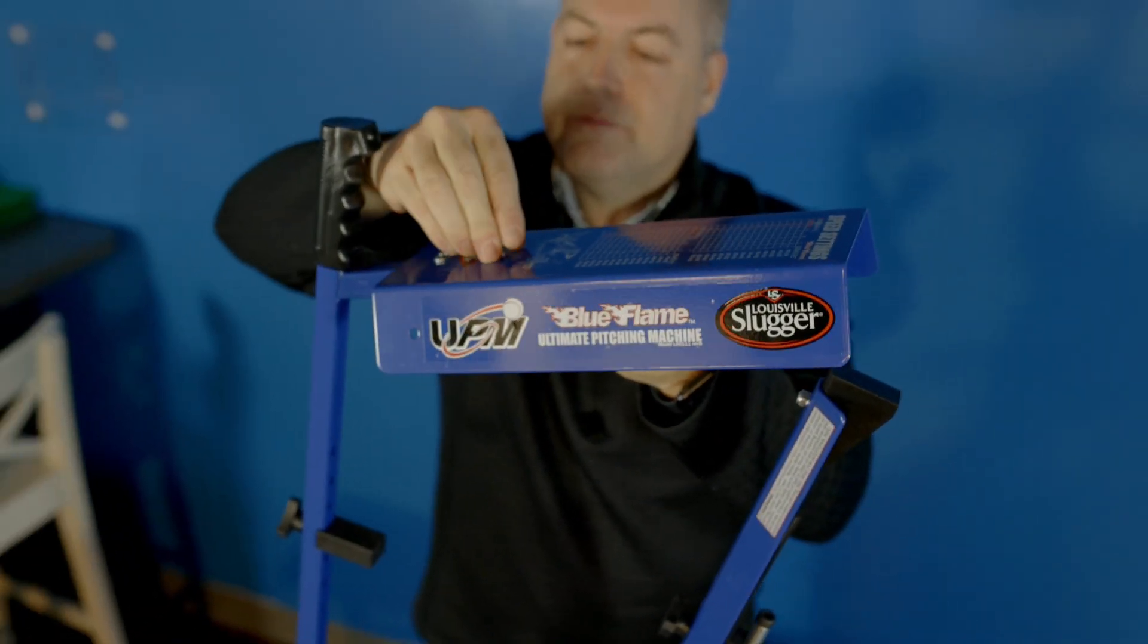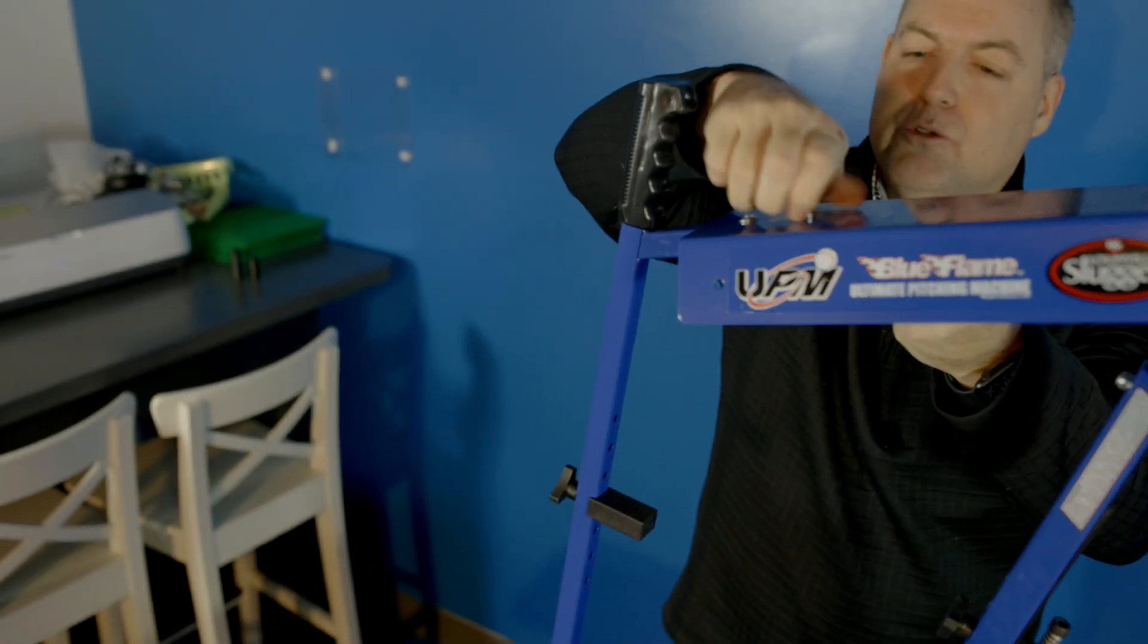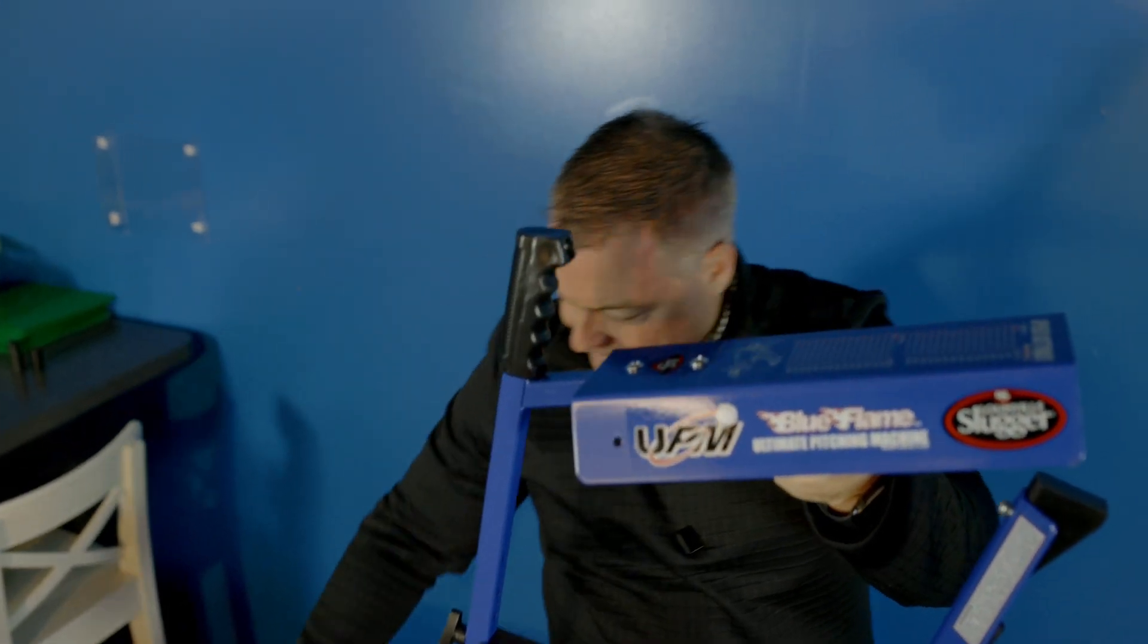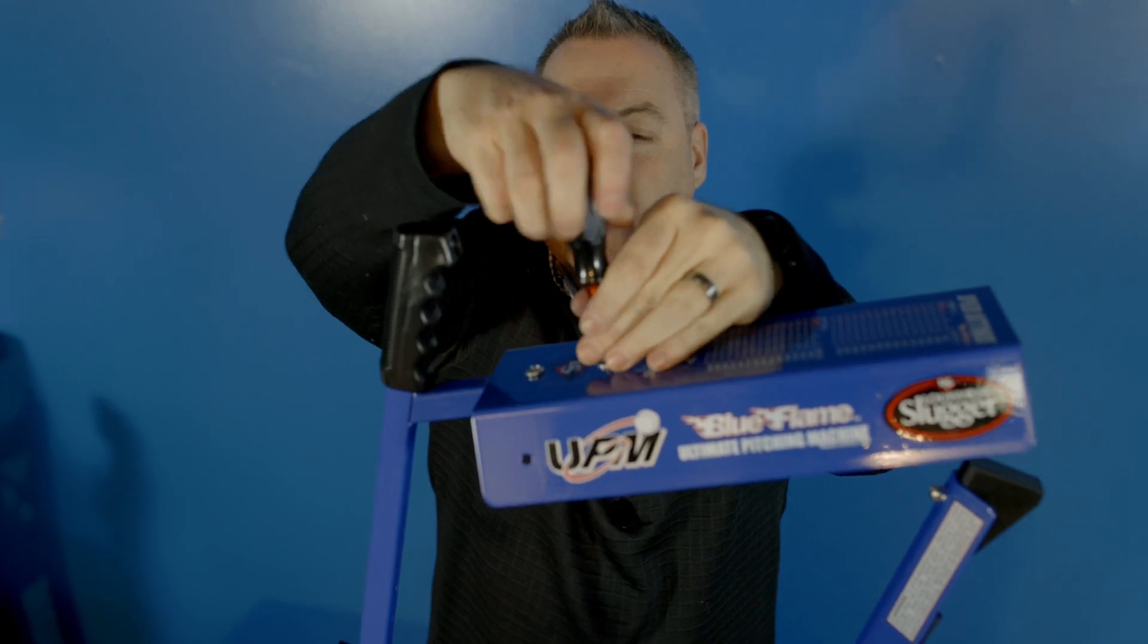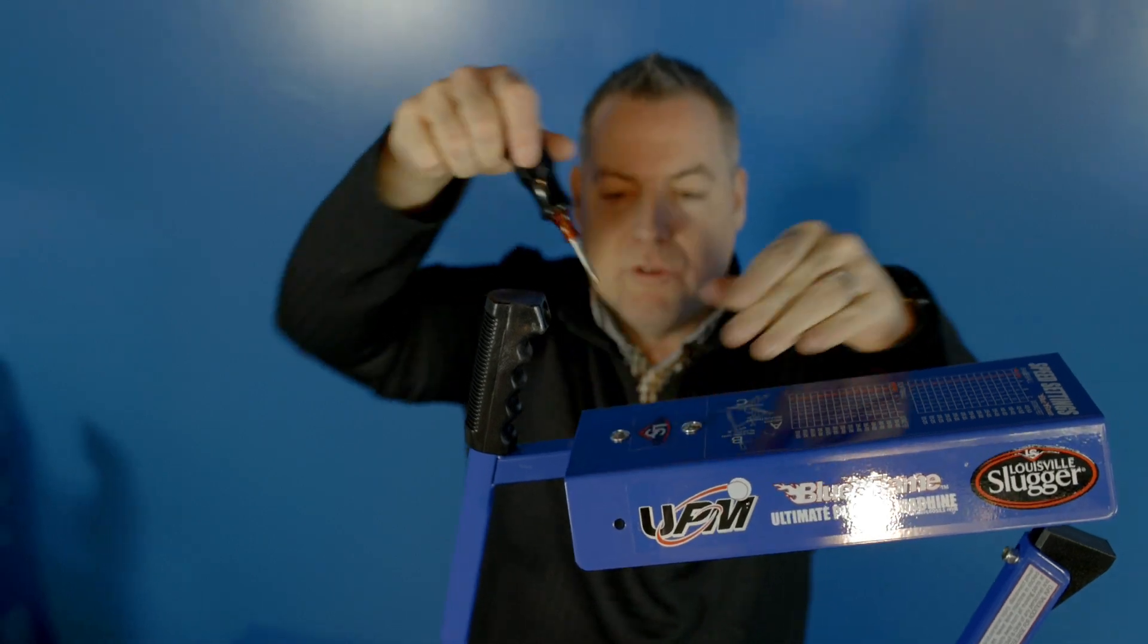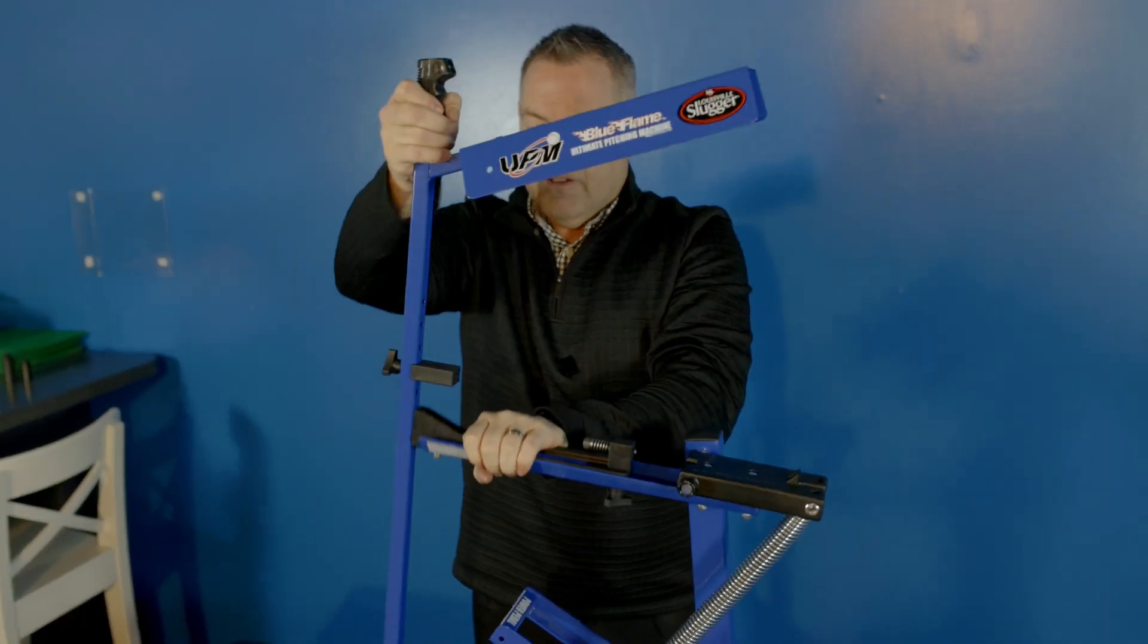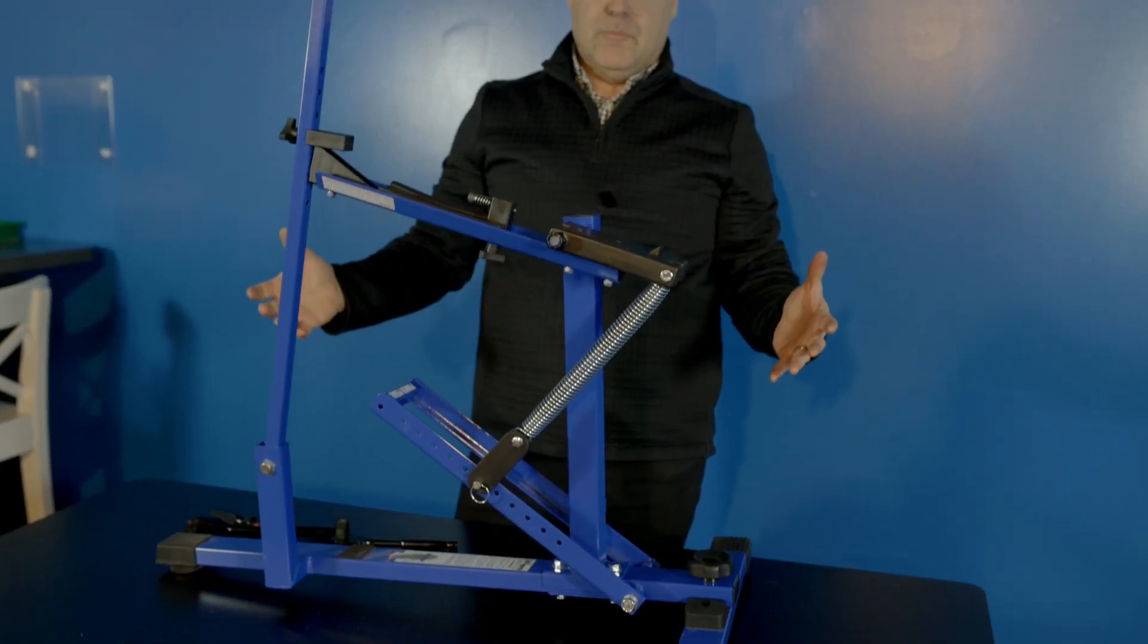There's two screws on the top. So I'm going to have those two screws that are hand tightened. And then I'm going to finish off by just taking the normal screwdriver and hand tightening with the screwdriver so it's nice and secure. And then we have our completed assembly of the Louisville Slugger Blue Flame Pitching Machine.